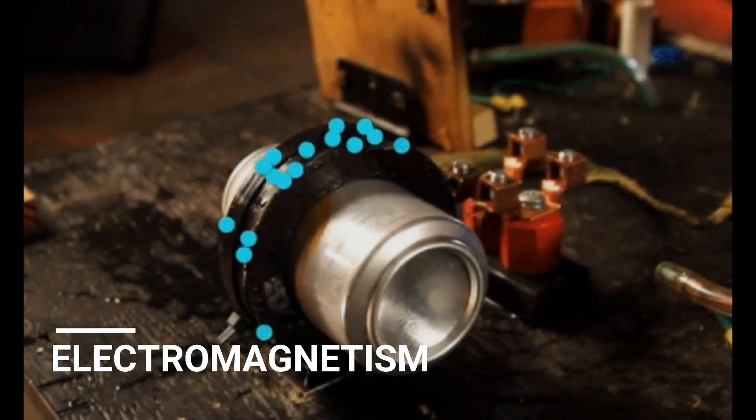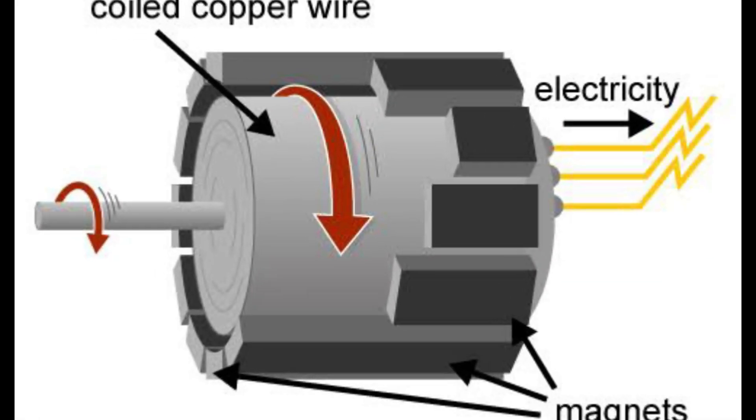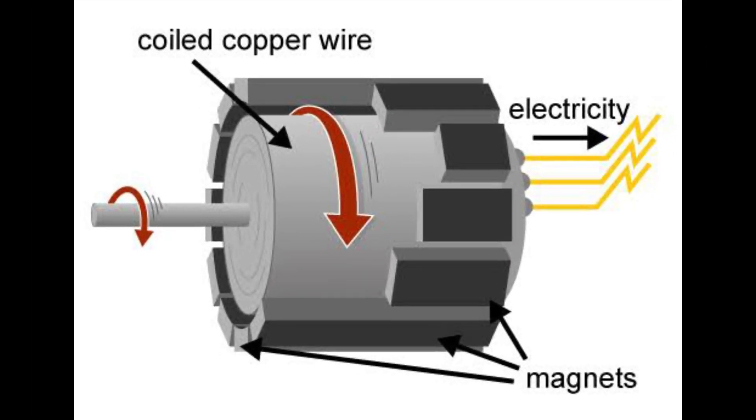Electromagnetism is the science of charge and of the forces and fields associated with charge. Electricity and magnetism are two aspects of it.